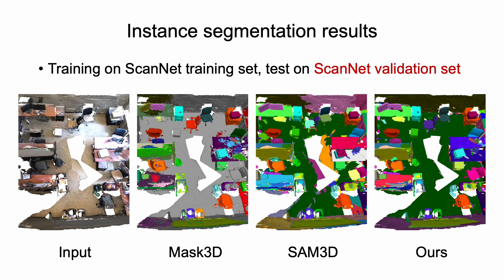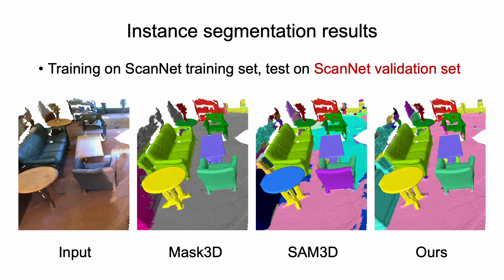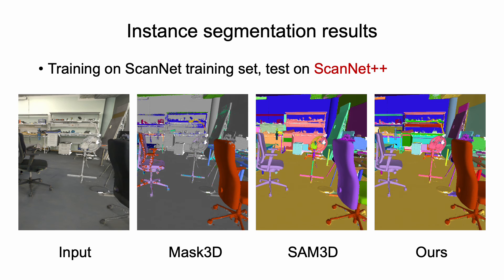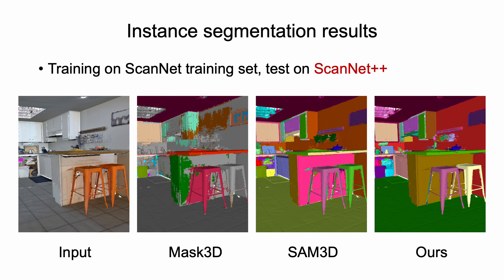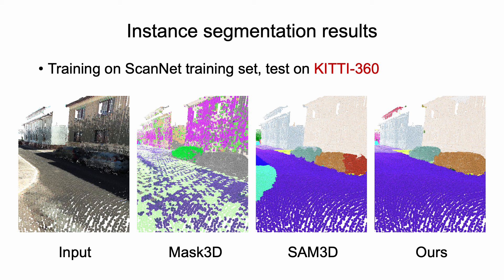We train the GNN on the training set of ScanNet and evaluate the segmentation performance on the validation set. Without any fine-tuning, we validated our method on ScanNet++, where the scene point clouds have much higher resolution. We also tested the generalizability of our method on KITTI360, where the types of scenes are completely different from ScanNet.